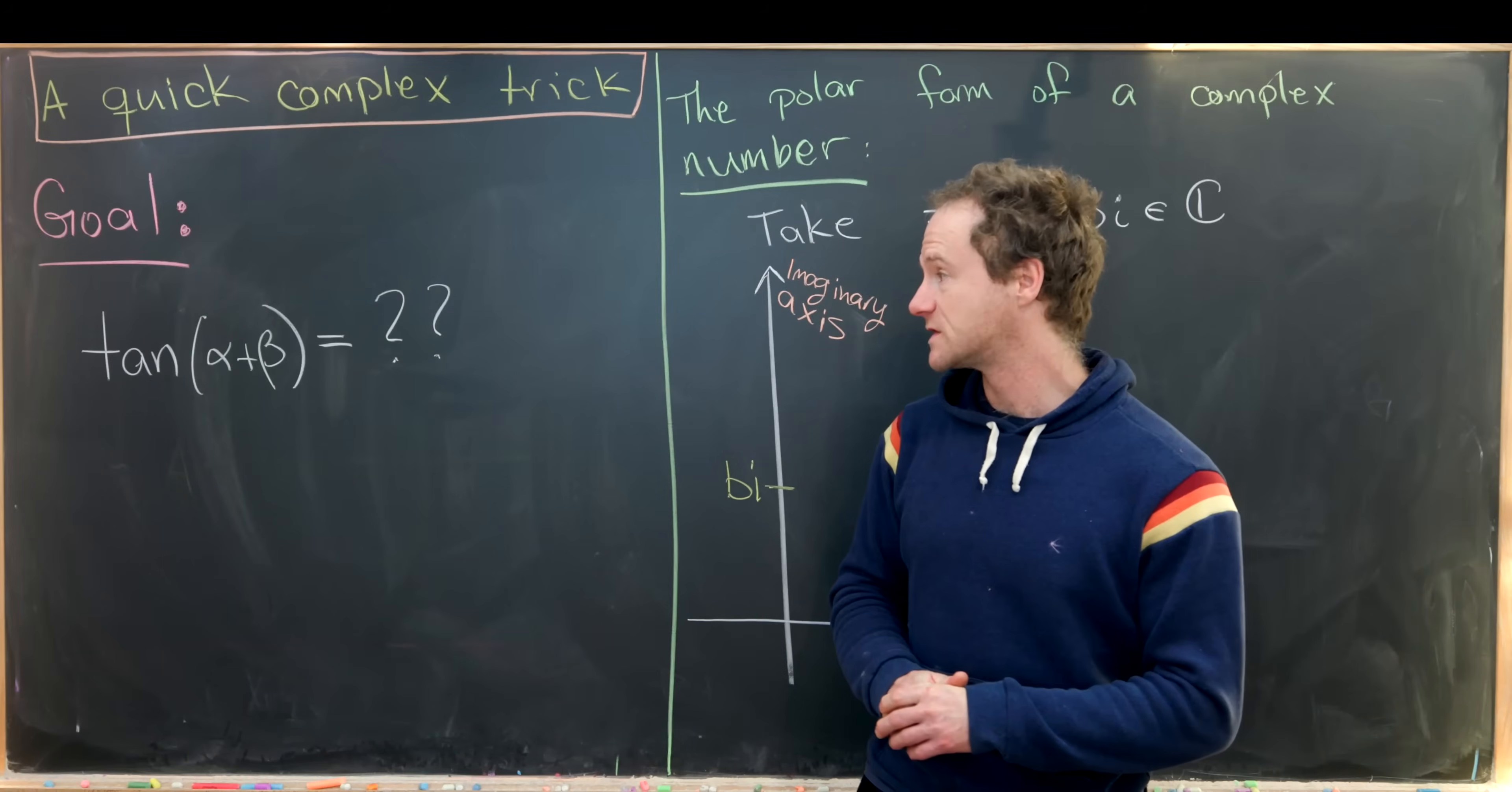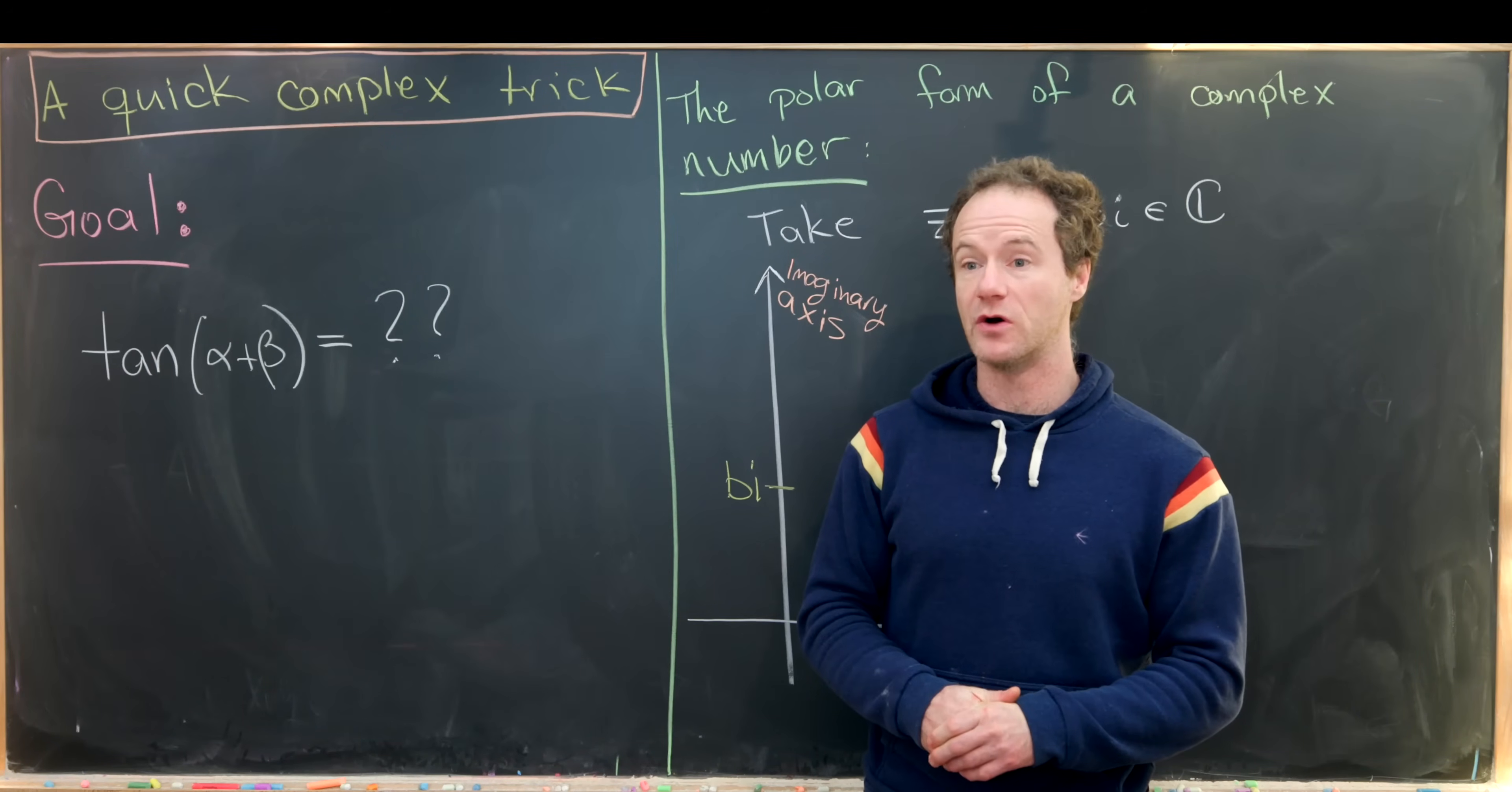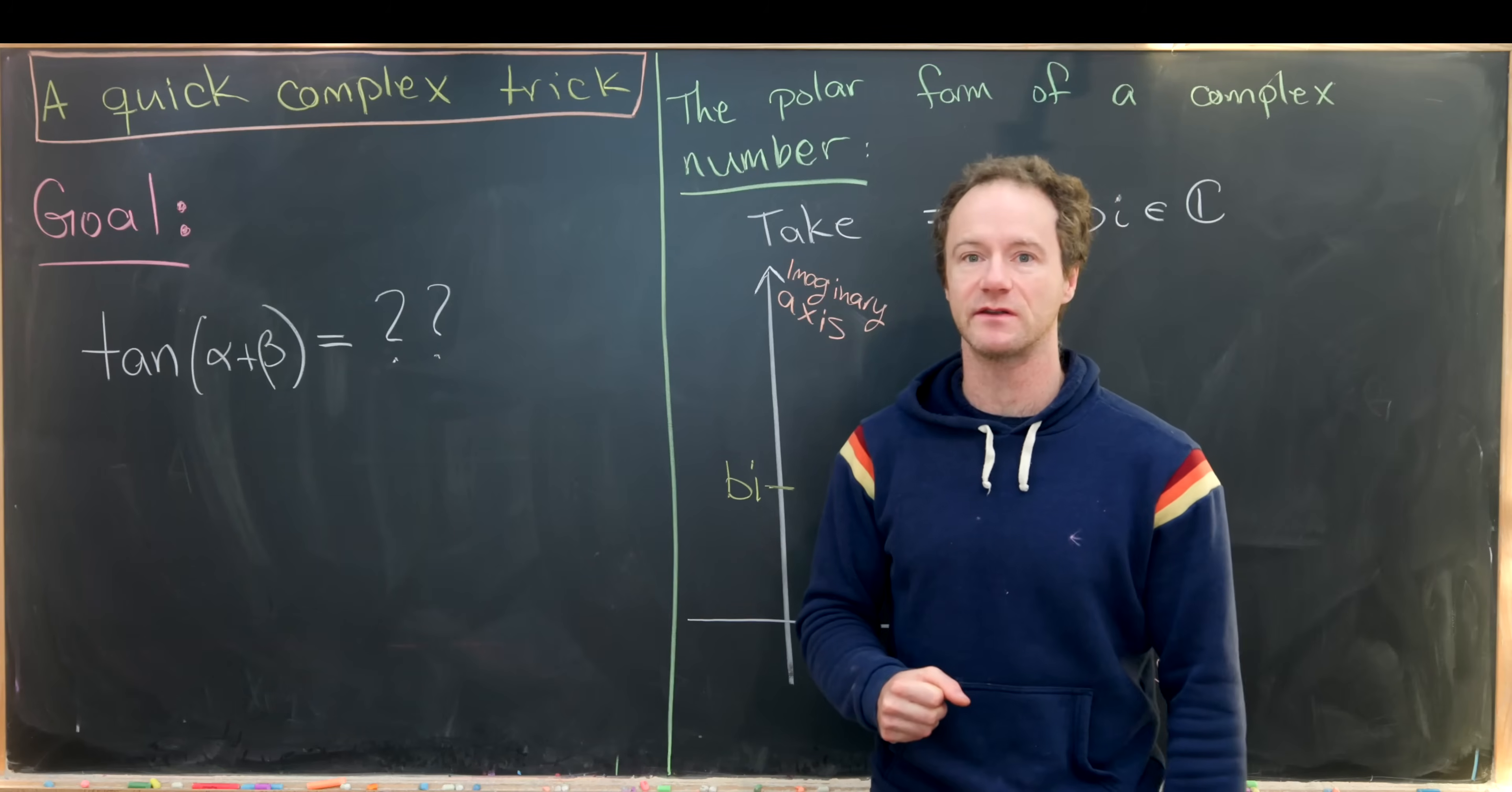Here I want to derive the angle sum formula for the tangent function using the geometry of complex numbers. This is not quite as well known as the derivation involving complex numbers for the sum angle formula of sine and cosine, but I think it's just as nice, or maybe even a little bit nicer.